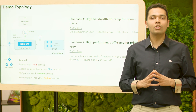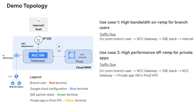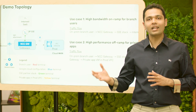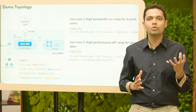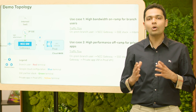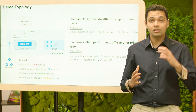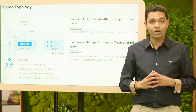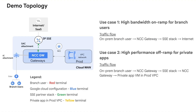For this demo, we are going to showcase two use cases. Use case one is high-bandwidth on-ramp for an on-prem branch user to access the internet with SSE inspection. In the second use case, we will demonstrate how an on-prem user is able to access a private application over the Google backbone post-SSE inspection. Throughout the demo, terminals will appear in separate colors. The on-prem branch user will be in the red terminal. NCC Gateway, Cloud Router, Secure Access Connect, and all Google Cloud-side configurations will be in the blue terminal. The SSE stack will be in the green terminal, and the private application VM inside the VPC will be in the yellow terminal.